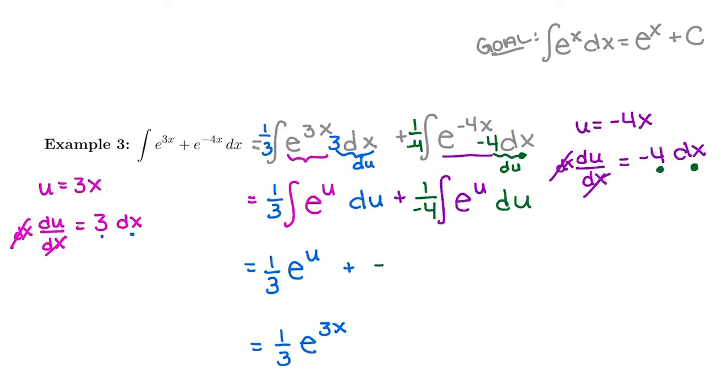So when I go to integrate, I'm going to keep that negative one-fourth outside. Antiderivative of e to the u is e to the u plus k. Looks just like our goal here. The antiderivative of e to the x was e to the x plus c. So the antiderivative of e to the u was e to the u plus k.